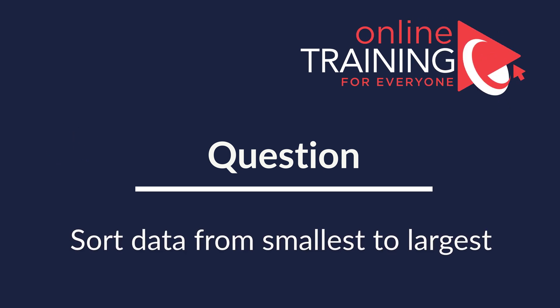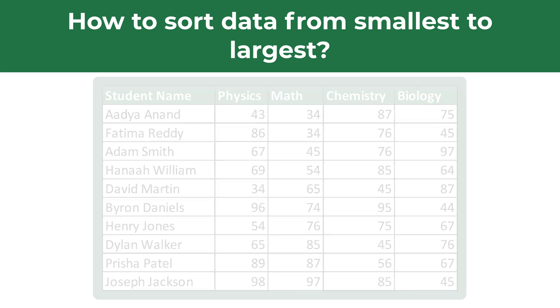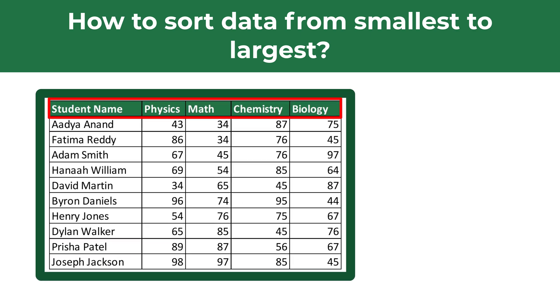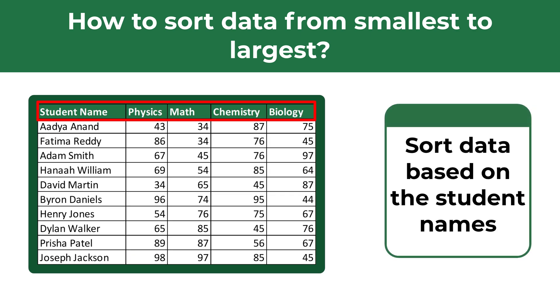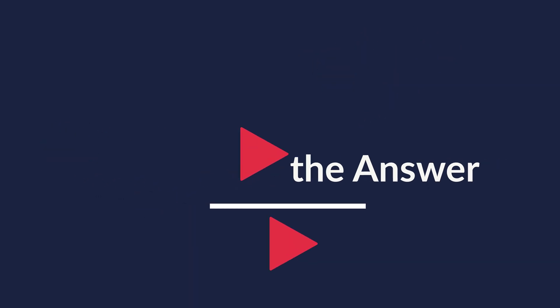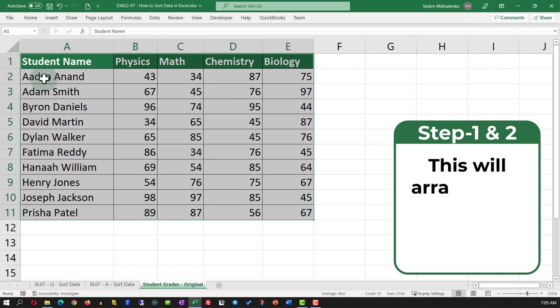A lot of times you might get a question on how to sort data in Excel from smallest to largest. For example, you might be presented with a data set which shows student names and their grades in different subjects — here we see grades in physics, math, chemistry, and biology — and we need to sort this data set based on the student names. To accomplish this task we need to select the data set and in the Home tab navigate to Sort and Filter and select Sort A to Z.